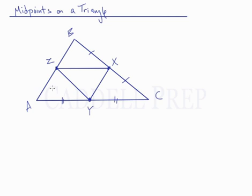Now let's take a look at line segment AB. When we add midpoint Z, we end up with line segment AZ being congruent to line segment ZB.